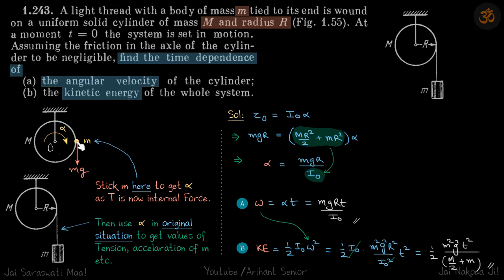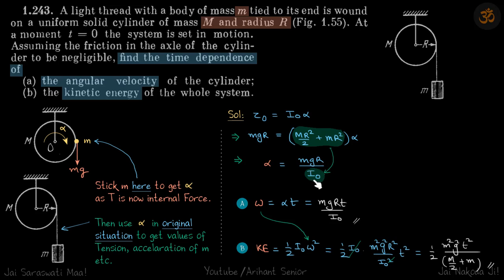With mass m stuck to the side of the pulley, the force rotating the system is mg. We must include the moment of inertia of small mass m as well. Applying torque about O: torque equals I times alpha, so mg·r equals (MR²/2 for the pulley) plus (m·r²) times alpha.